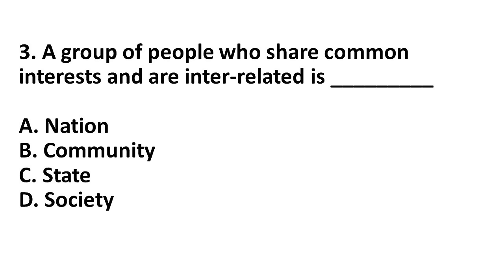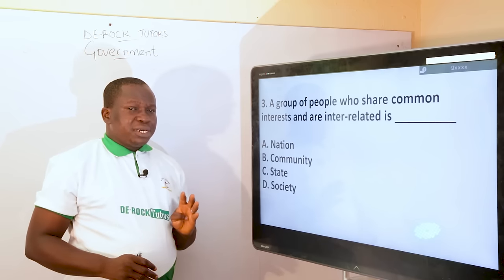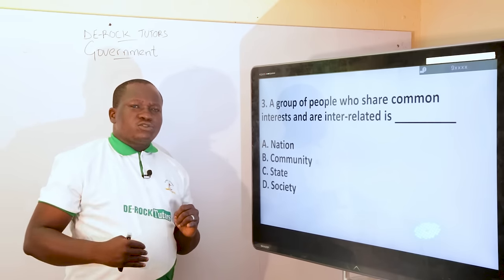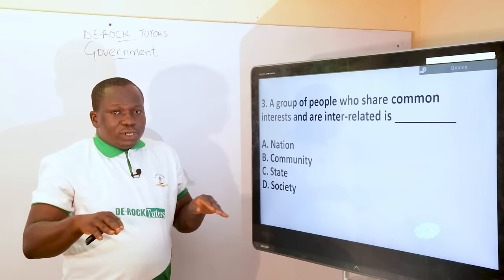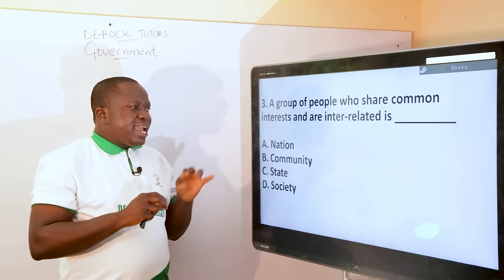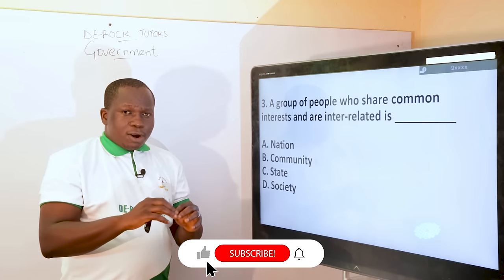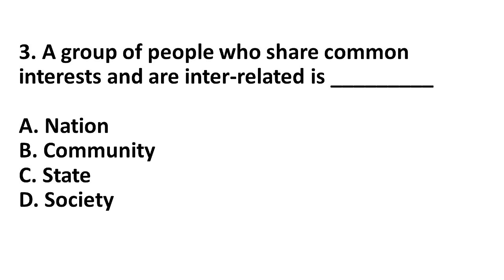Next question: a group of people who share common interests and are interrelated. We are sorting concepts in government that relate to a group of people. A state refers to a group of people; a nation refers to a group of people; a nation-state, a society, a political party, and a prayer group all refer to groups of people. Three things are important in this question: a group of people, same interests, and they are related. A nation consists of a group of people, but they share common culture, common custom, and common tradition — examples include the Yoruba nation, Igbo nation, Hausa nation, and Tiv nation.